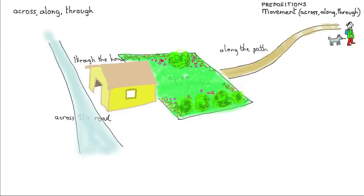To finish, I'll put the little chart back. Along — following a line. Across — from one side of the surface to the other. And through — into the middle of something and out the other side.